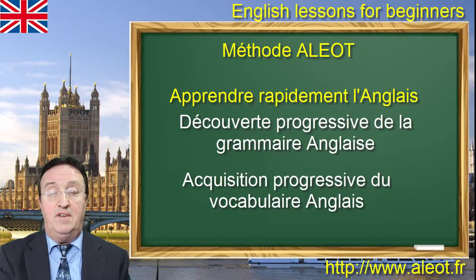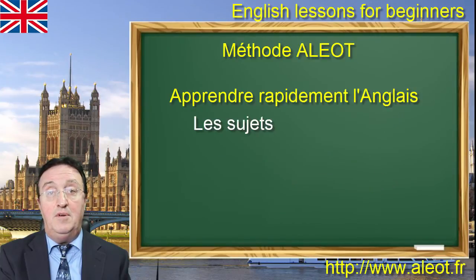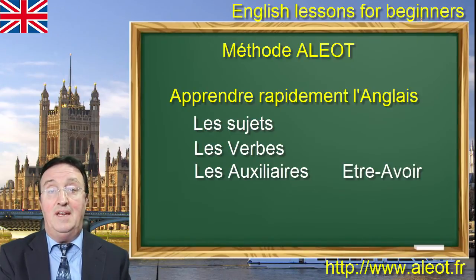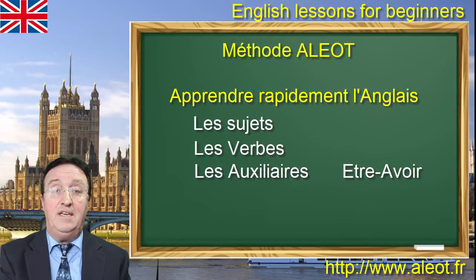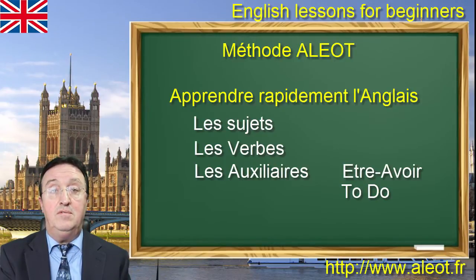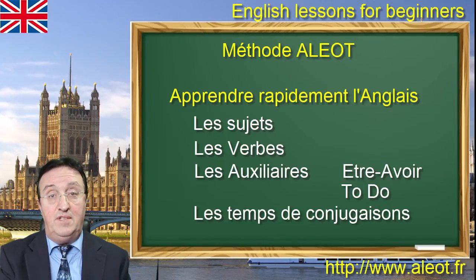Petit à petit, nous allons travailler sur les éléments fondamentaux, en commençant par exemple par le nécessaire dans une phrase : les sujets, les verbes, les auxiliaires. Vous verrez que les auxiliaires les plus utilisés en anglais, comme en français, ce sont les auxiliaires être et avoir — soit to be et to have — et un auxiliaire très courant en anglais, to do, qui sera très largement utilisé lorsque vous aurez des questions à poser. Vous verrez que nous avons une approche qui sort de l'ordinaire.